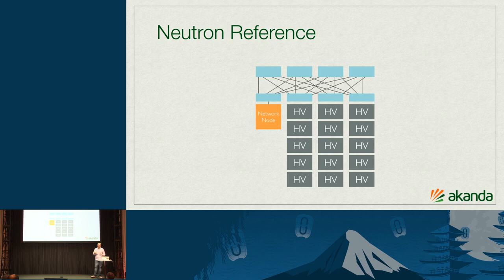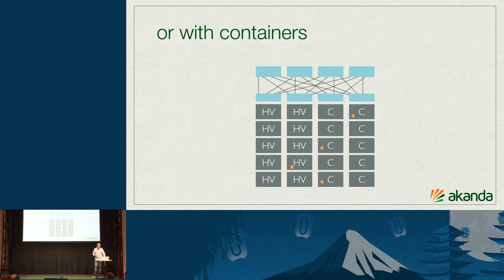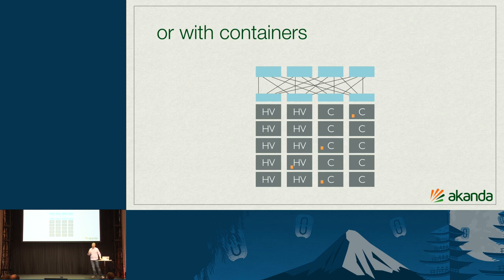One of the challenges is those nodes become single points of failure and points of congestion. With ASTARA, we work around that by spreading out the services either on VMs across particular hypervisors, or in containers. The driver model makes it easy to say: I want to orchestrate this particular network function in a container or orchestrate it in a service VM. You can also change the way it's deployed based on the driver, and the new flavor framework gives you the option to tune that as well.